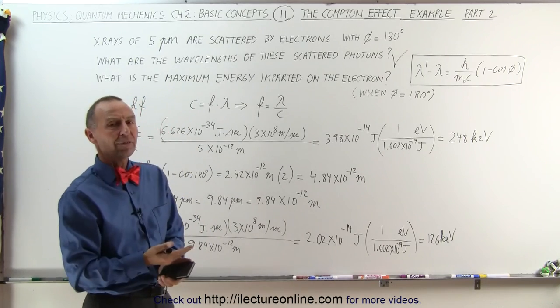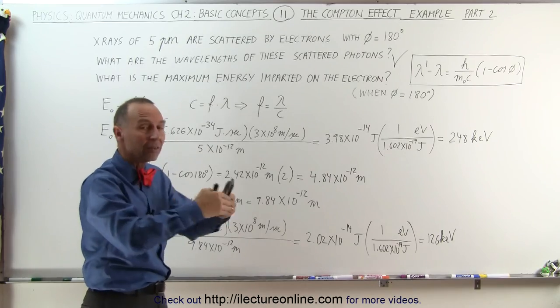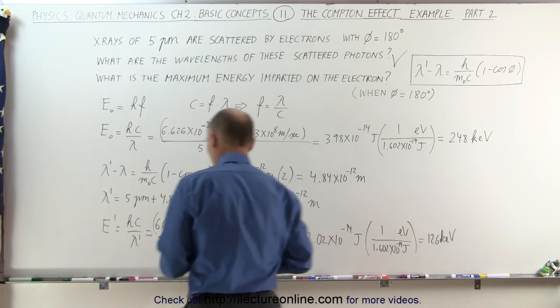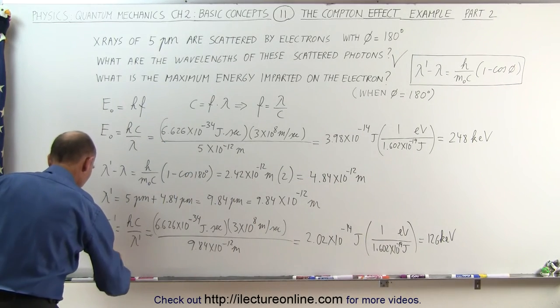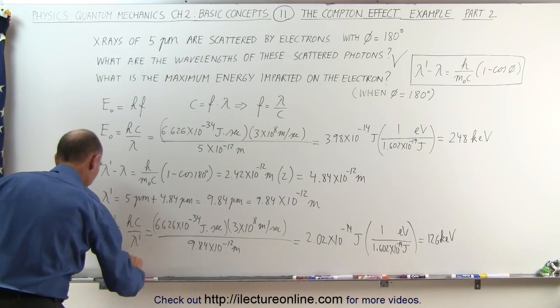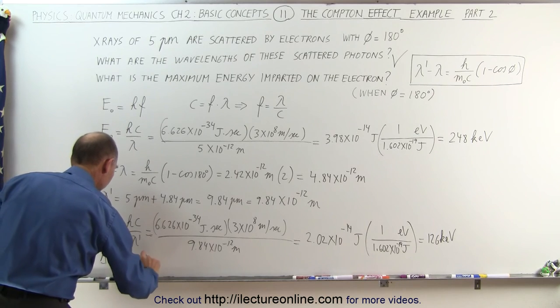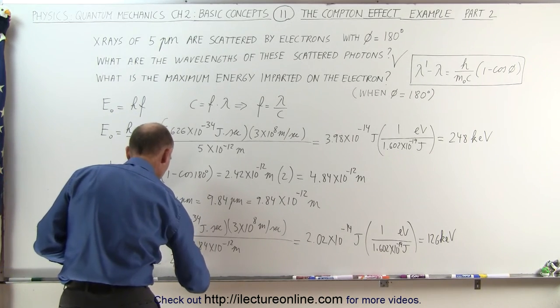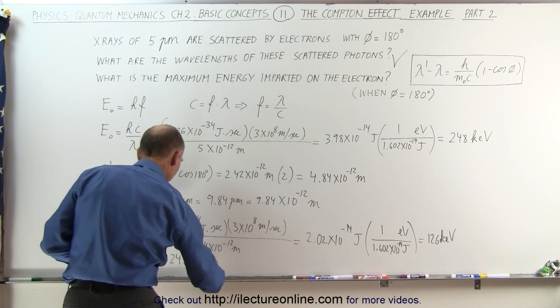And what happened to the difference? Well, the difference was imparted on the electrons. The electrons came away with the difference of this. So let's see, the change in the energy is equal to energy initial minus energy final, which is equal to 248 kilo electron volts minus 126 kilo electron volts, which is equal to 122 kilo electron volts.